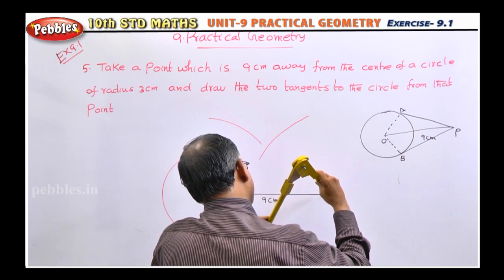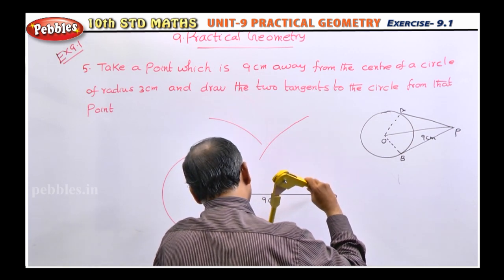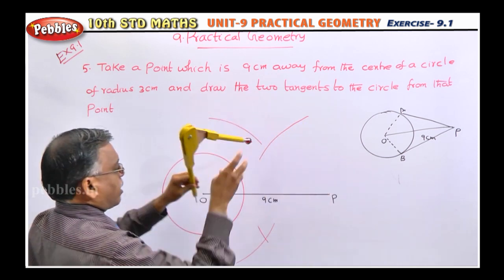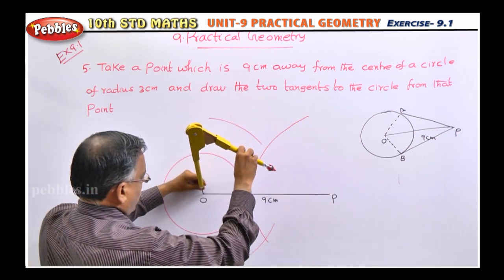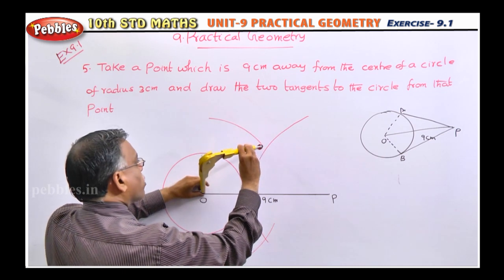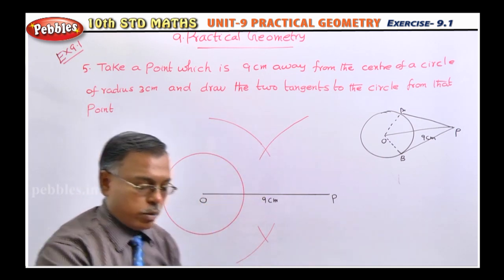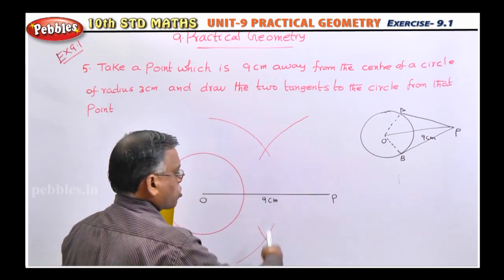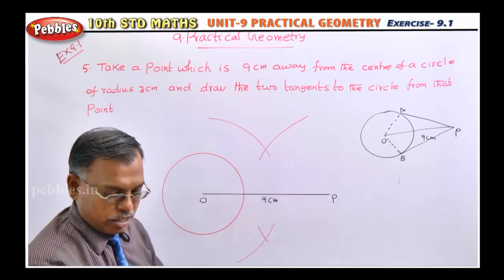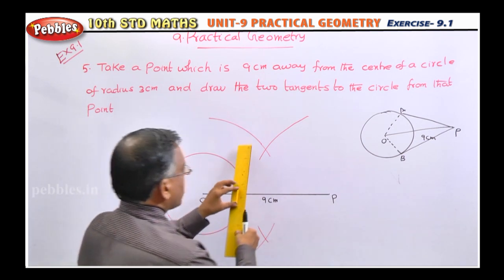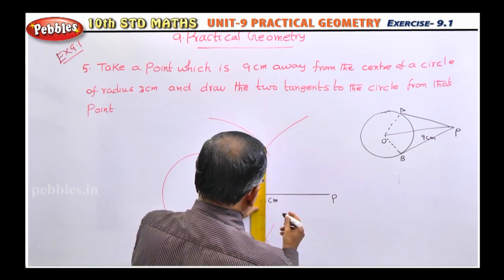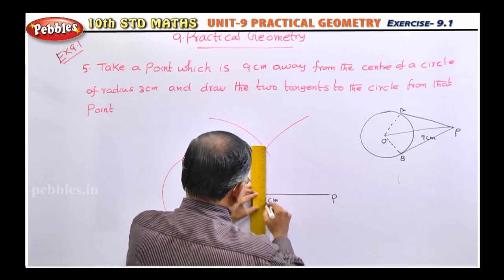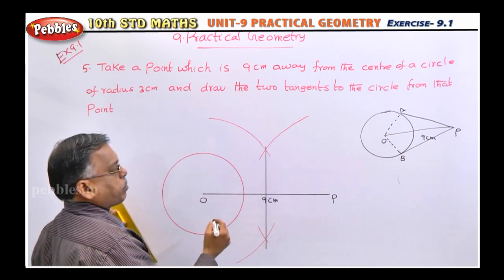Similarly, here also, with the same length, you have to draw arcs. So it will cut like this on both sides — from O center it will cut like this. So now we will draw the perpendicular bisector by joining these two intersection points. That is the perpendicular bisector.